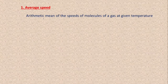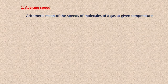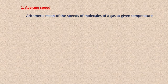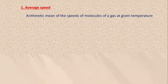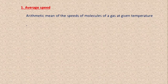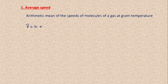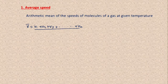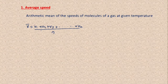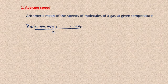The first type is called average speed. Average speed can be defined as the arithmetic mean of the speeds of molecules of a gas at a given temperature. We can use the formula V-bar, where V-bar is equal to (V₁ + V₂ + V₃ + … + V_N) all divided by N. V₁, V₂, V₃, etc. are the speeds of N gas molecules. So average speed is the sum of all velocities of all molecules divided by the number of molecules.